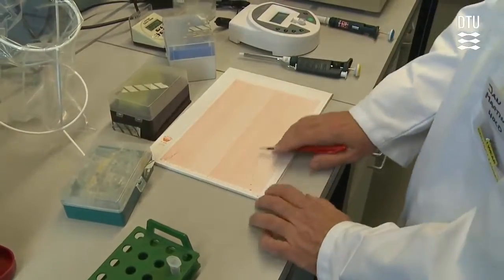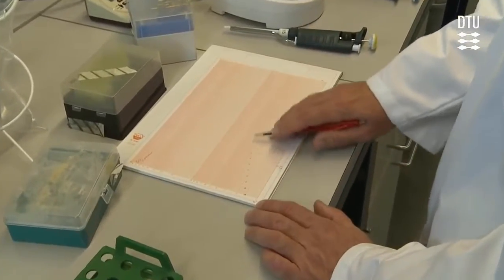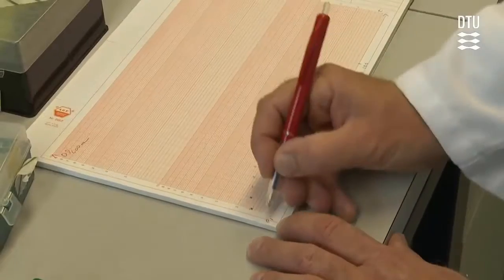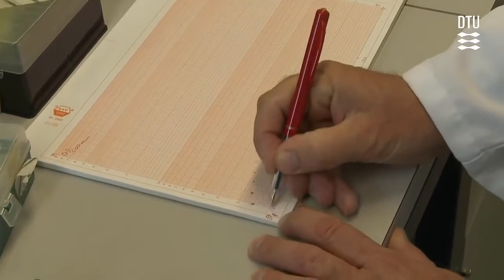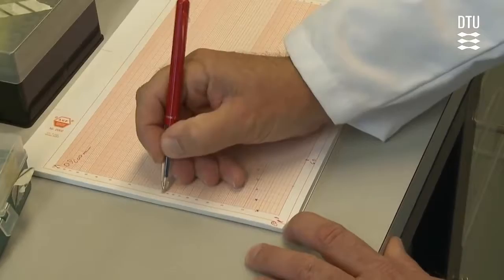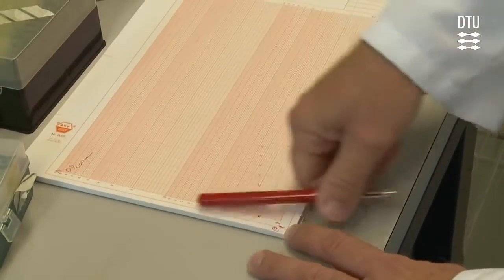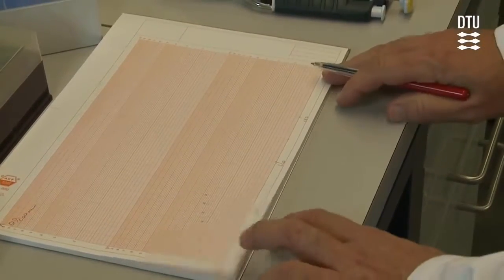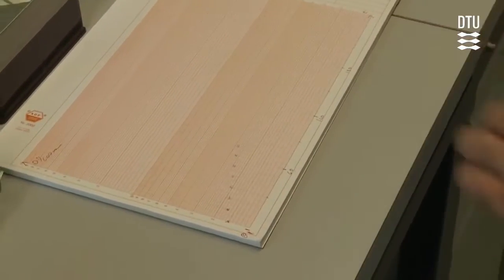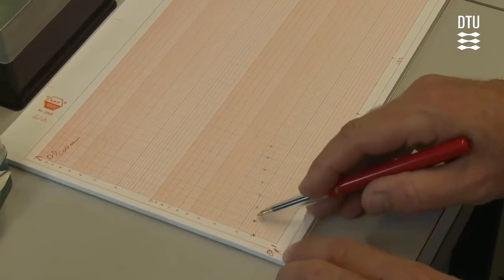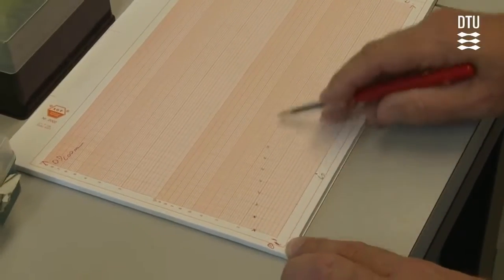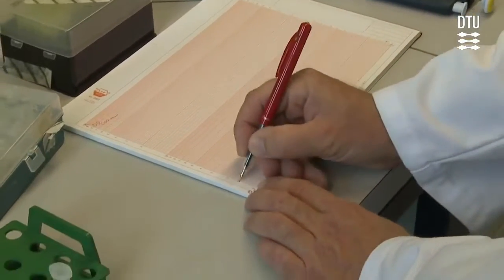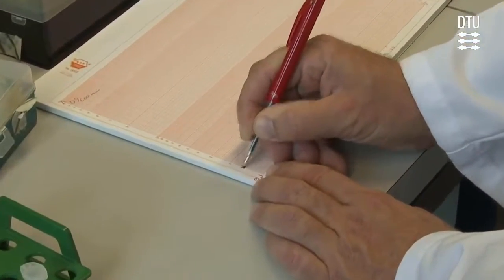Now we plot that value into a semi-logarithmic plot. You can see I did a previous experiment, so you can see how it's supposed to go. We start by plotting the first value, 0.15. The y-axis is the optical density and the x-axis is the time. One centimeter equals 10 minutes, and you can plot the values and follow the growth.